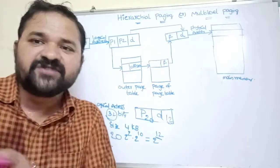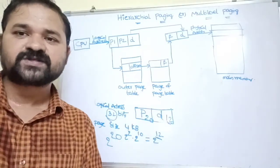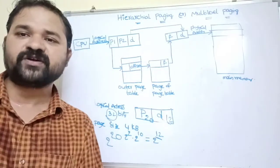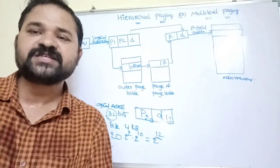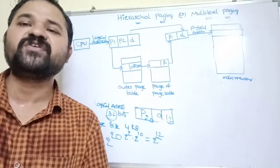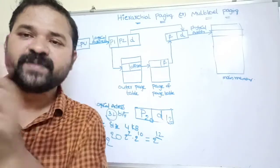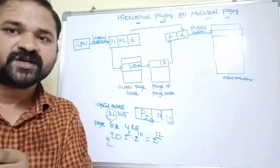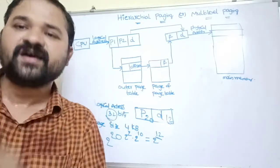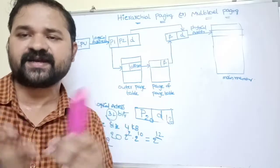To overcome this problem, instead of storing all page table information in one page table, we split it among multiple page tables. Each page table stores a limited amount of information, so the burden on a single page table is reduced.